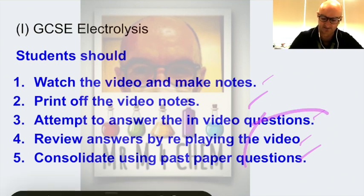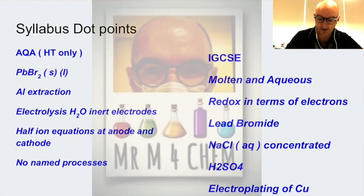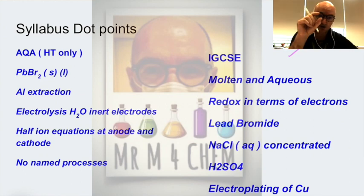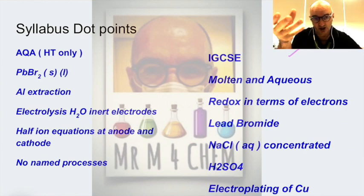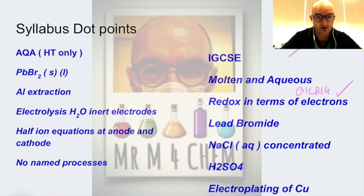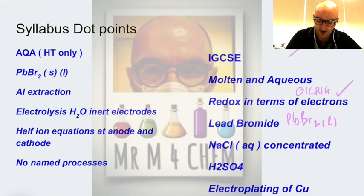In electrolysis, let's look at the basics. We need to cover both syllabuses — iGCSE and AQA — they're very similar. iGCSE first: they want molten, which just means it has gone from solid to liquid. Redox in terms of electrons — we'll look at OIL RIG later. Lead bromide is mentioned in the syllabus as one you must know: PbBr₂, and it must be molten. Sodium chloride aqueous — AQ means it has water in it, and crucially it is concentrated.